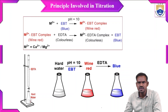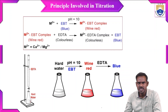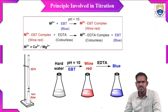The principle involved in this titration: EBT initially forms a complex with the hardness-causing cations. Three things are taken in the conical flask — hard water sample, EBT indicator, and buffer solution. The EBT complex of either calcium or magnesium forms and appears wine red. When titrated against EDTA solution (disodium salt of EDTA), EDTA replaces the EBT complex. As a result, the EBT complex disappears, EBT returns to its free form, and EDTA forms a complex with the hardness-causing cations.